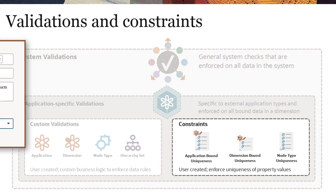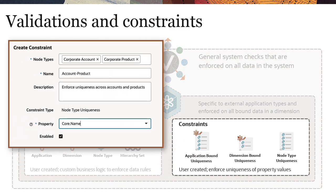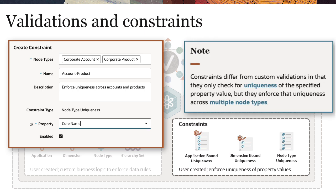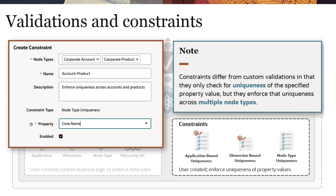For example, create a constraint to ensure that a product node cannot have the same name as an account node in an Oracle Financials Cloud general ledger application. Constraints differ from custom validations in that they only check for uniqueness of the specified property value, but they enforce that uniqueness across multiple node types.